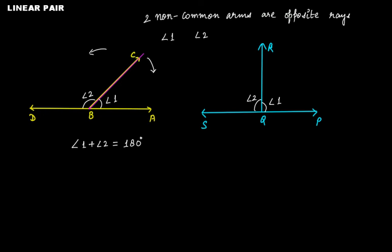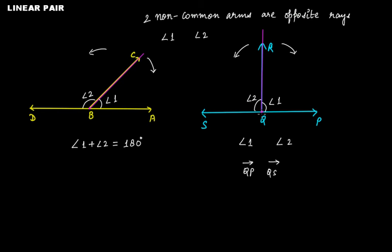Are angles 1 and 2 adjacent angles here? Yes, angles 1 and 2 are adjacent angles because there is a common vertex, a common arm, and the two non-common arms QS and QP are on either side of this common arm. Since the two non-common arms QP and QS are opposite rays — QP going in one direction and QS in the opposite direction — that makes it a linear pair.